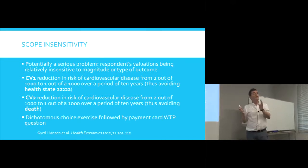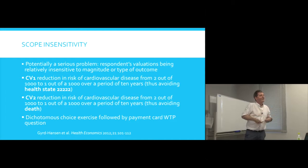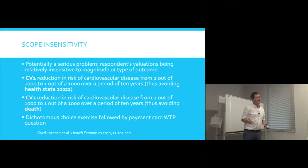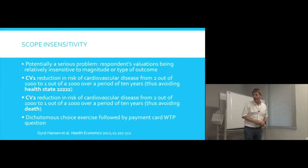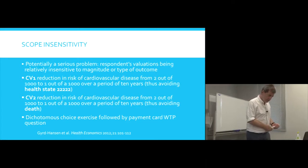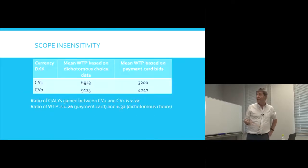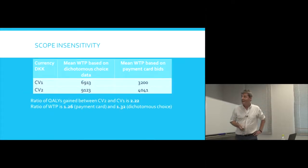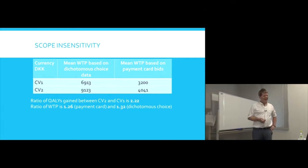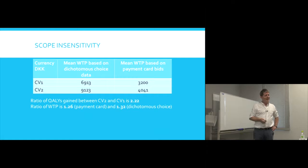So in one case, you haven't changed the risk of death, but you've changed the risk of a particular ill health outcome. But in the second one, it was described in terms of changing the risk of death. And so what they used was a dichotomous choice question, and also they followed that with a payment card question. What they found was rather interesting. It's Danish krona. I want to say about 10 yen to the krona, but I'm not a currency expert.